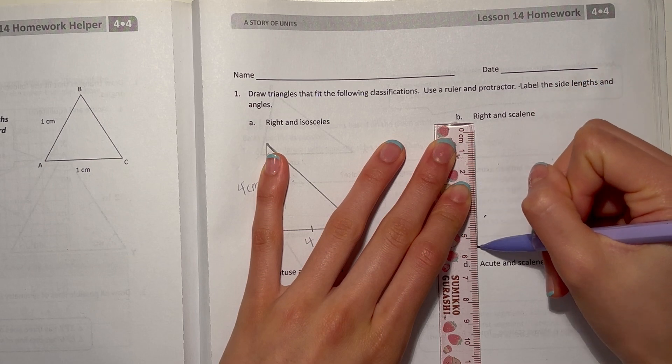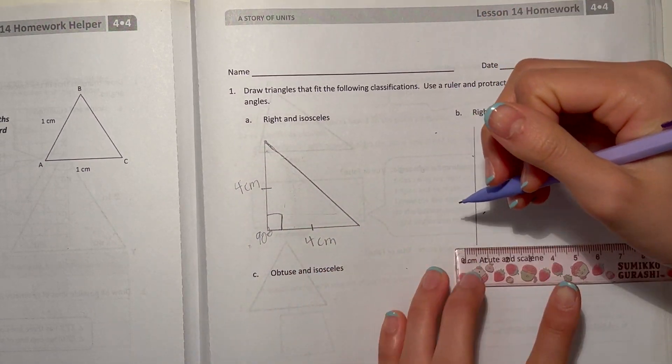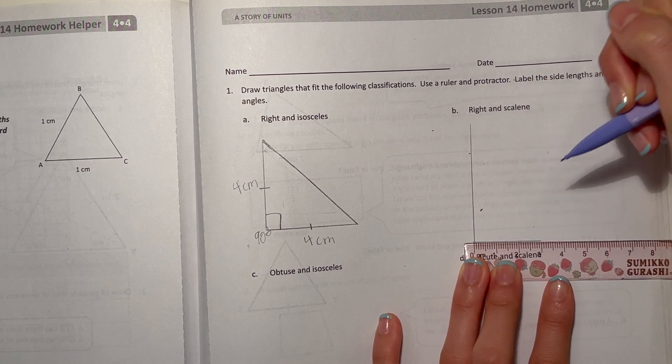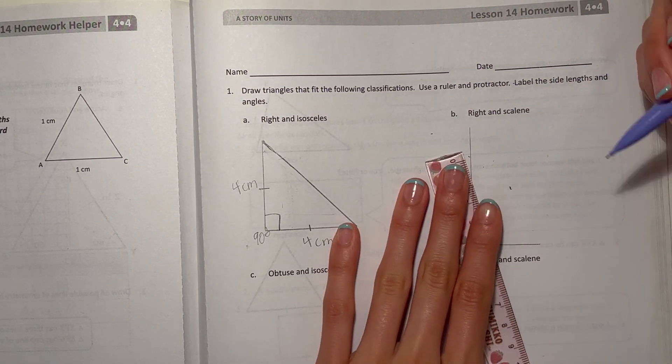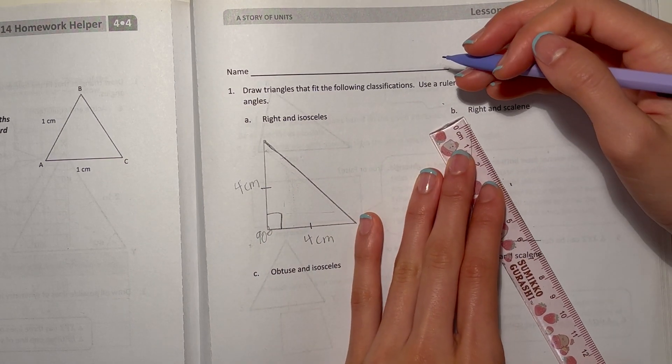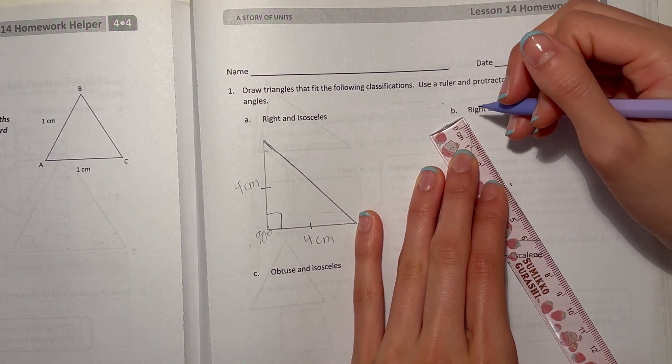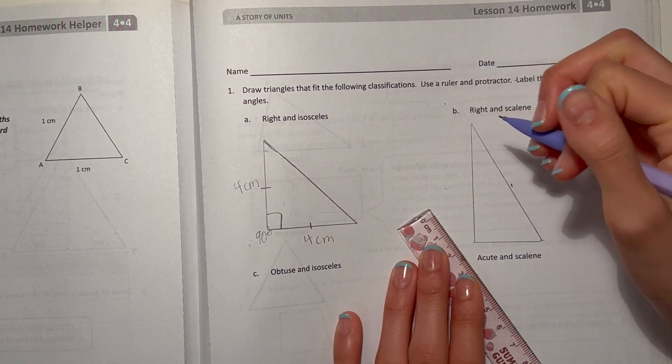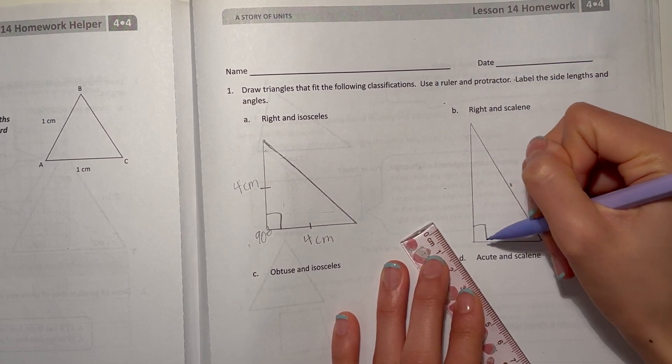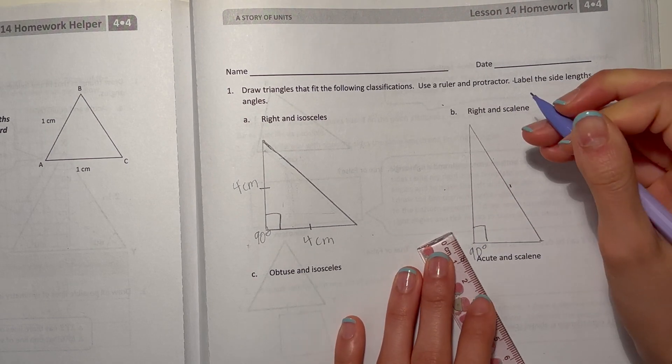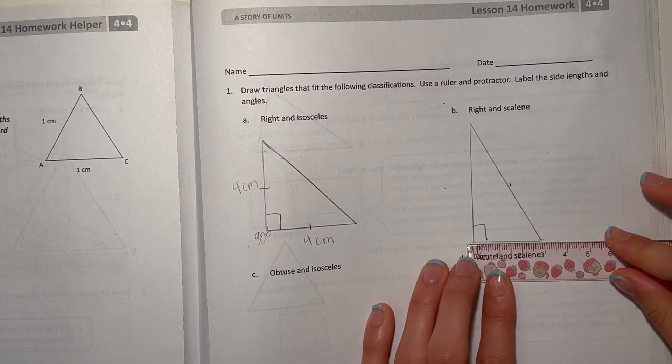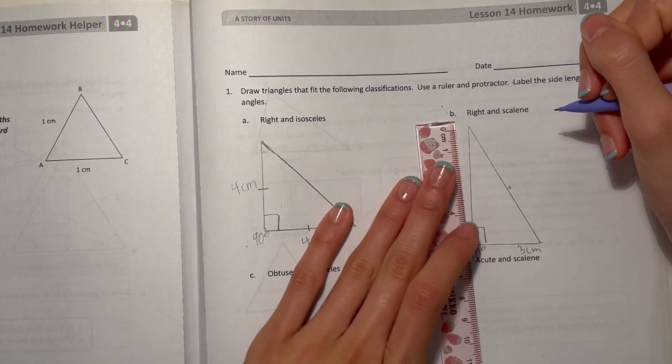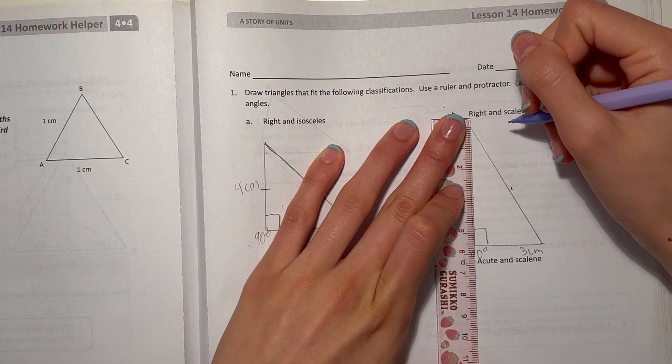So make sure it's different side lengths. You can start off with one super long, and our base can be super short. Right, 90 degrees right angle. So this is three centimeters.